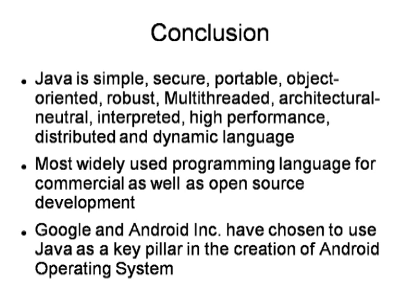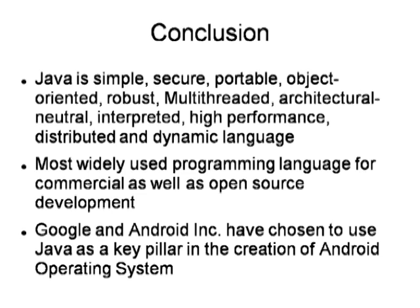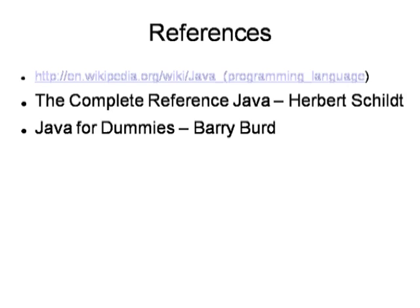To conclude: Java is a simple, secure, portable, object-oriented, robust, multi-threaded, architecture-neutral, interpreted, high-performance, distributed, and dynamic language. It is the most widely used programming language for commercial as well as open source development. Google and Android Inc have chosen Java as their key pillar in the creation of the Android operating system — so there is very significant importance to current programming in Java.